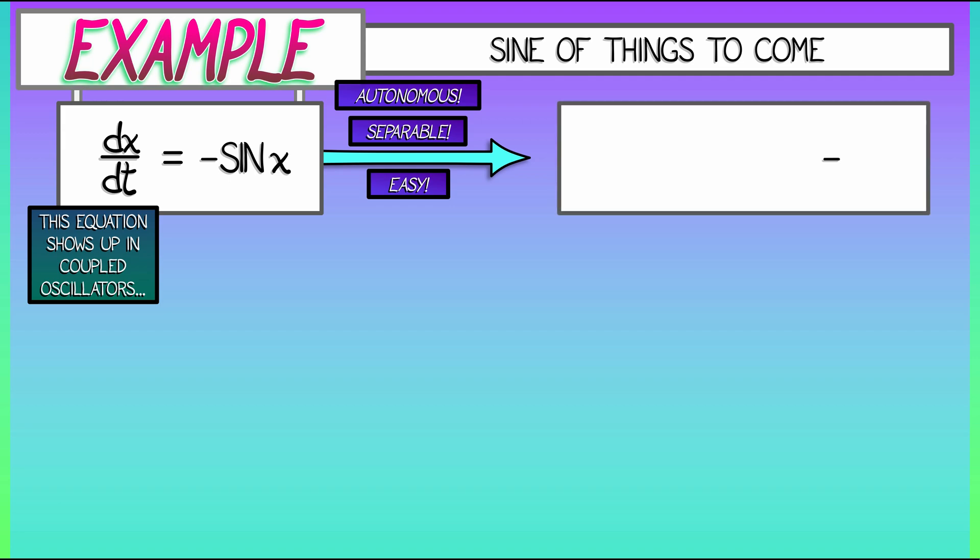On the right, we've got minus dt. On the left, dividing by sine of x, we've got cosecant of x dx. All we have to do is integrate both sides, just like we've done before.